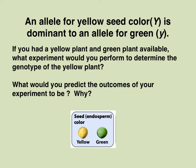I want us to think about an experiment where we have two plants of different phenotypes: a plant that only makes green seeds and a plant that only makes yellow seeds. We know what the genotype of the green plant is, but we can't be sure what the genotype of the yellow-seeded plant is. Take a minute, pause, and determine those genotypes.